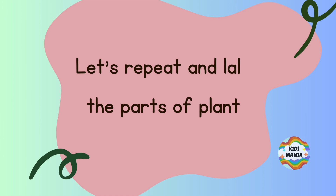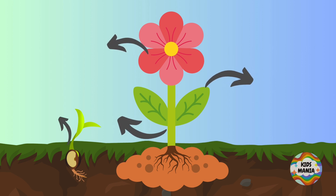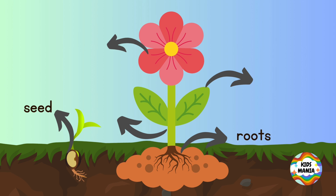So let's repeat and label the parts of the plant. Are you ready? Can you name them? Let's try: seed, roots, stem — the next is leaf, and this is flower.